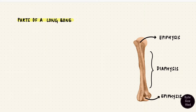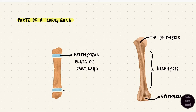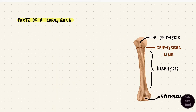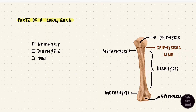Bones grow up to a certain age and then they stop — that age differs depending on which bone we're talking about. They grow because between the epiphysis and the diaphysis is a plate of cartilage called the epiphyseal plate. With growth, bone replaces this cartilage, and eventually what remains once fully grown is an epiphyseal line where the bone has fused. The expanded ends of the diaphysis are called the metaphysis.